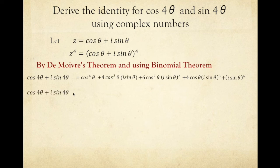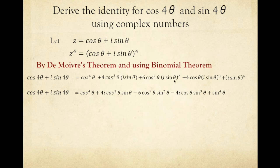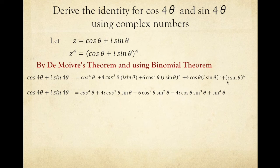Removing the brackets and simplifying: the first imaginary term gives plus 4i cosine cubed theta sine theta. The i squared term gives negative 6 cosine squared theta sine squared theta. Since i cubed equals negative i, the next term becomes negative 4i cosine theta sine cubed theta. Since i to the power of 4 equals positive 1, the final term is just sine to the power of 4 theta. This is now in simplified form.